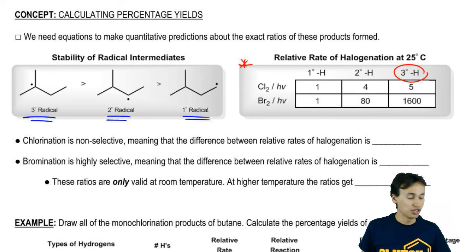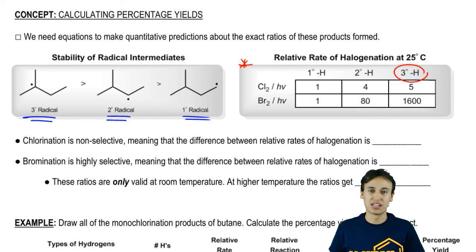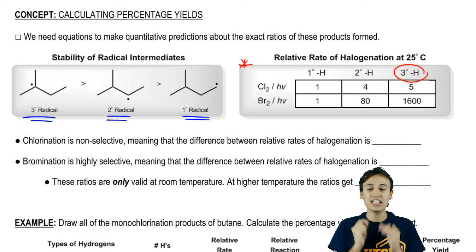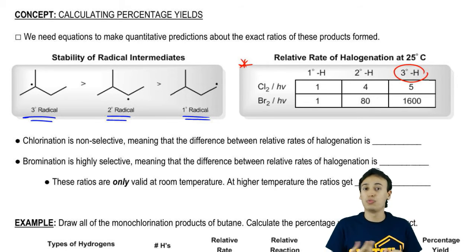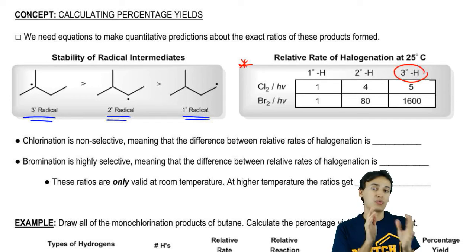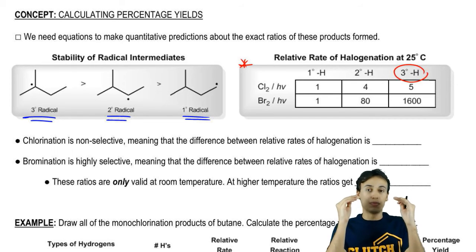Now, if you look at bromination, bromination is much more selective because bromination likes to brominate tertiary carbons 1,600 times more than primaries. You can imagine that that's why we call bromination highly selective versus chlorination which we basically call non-selective. It has to do with the fact that the difference between the relative rates are much bigger when you get to bromination.